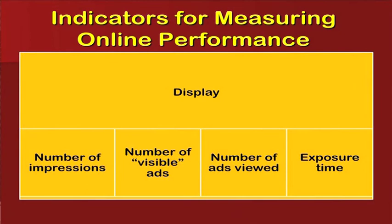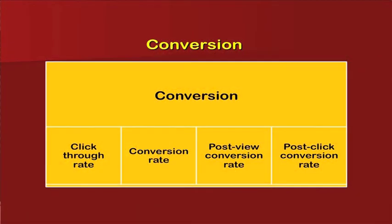For measuring online performance, online advertising can be measured by display indicators: the number of impressions, number of visible ads, number of ads viewed, and the exposure time. Electronic or e-advertising is easy to record because everything on the internet and computer is recorded — how much time customers have been exposed to the ads, the reviews given, the likes recorded, and the display of the ads showing how much customers are interested.